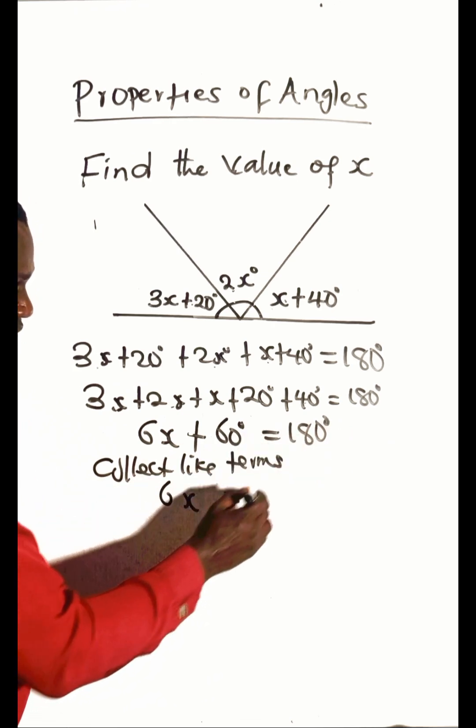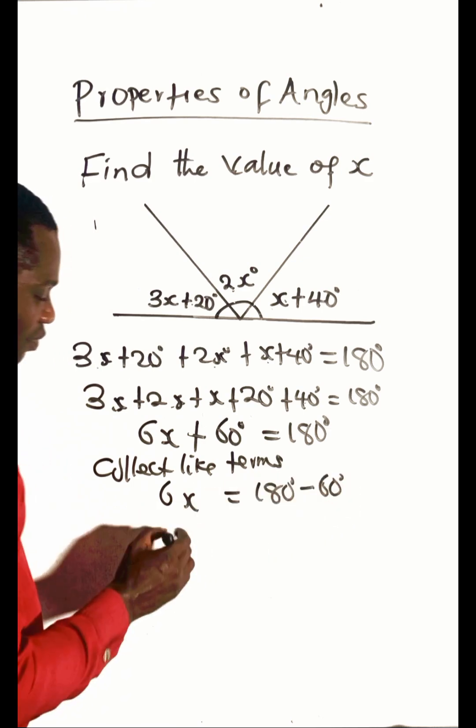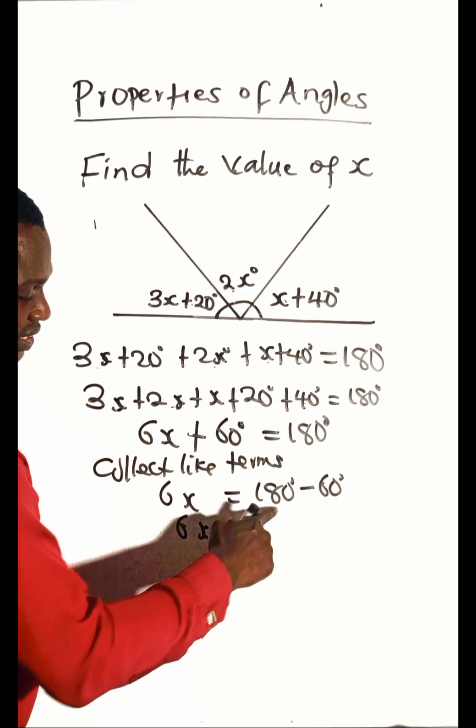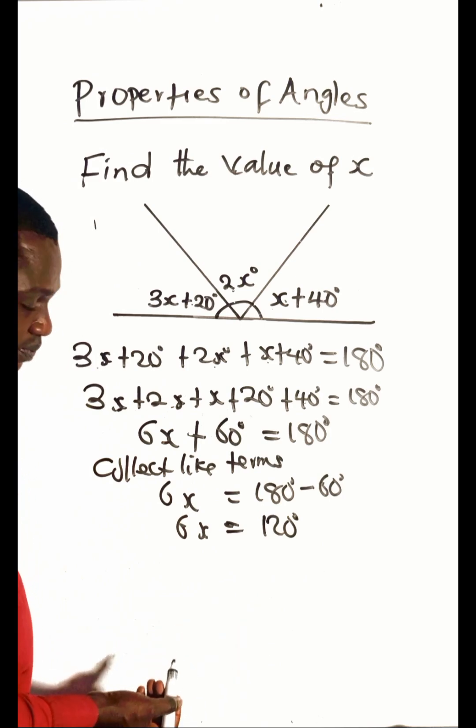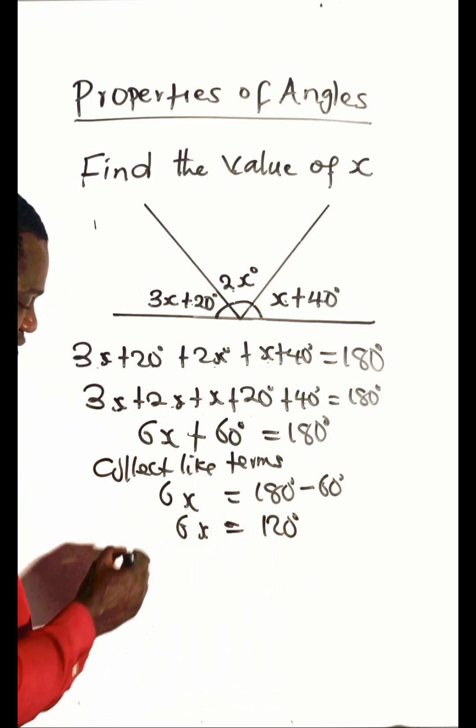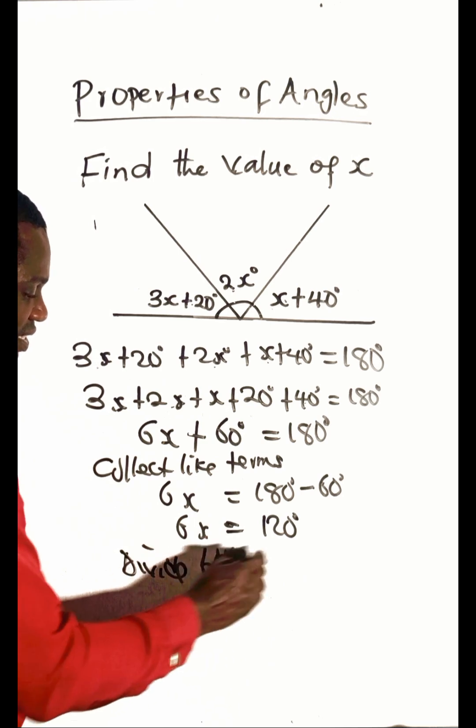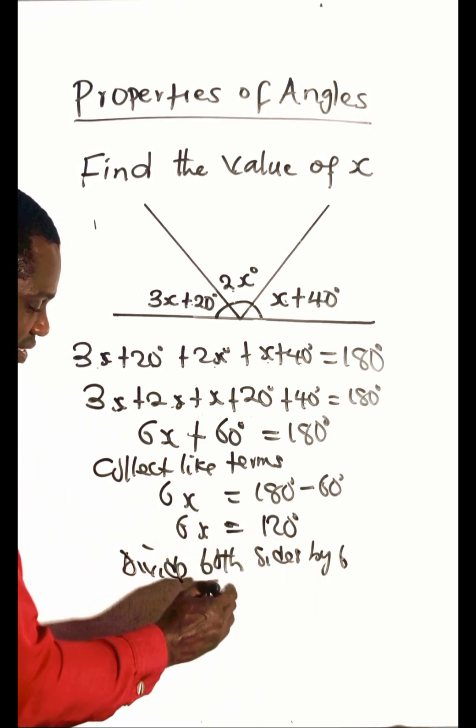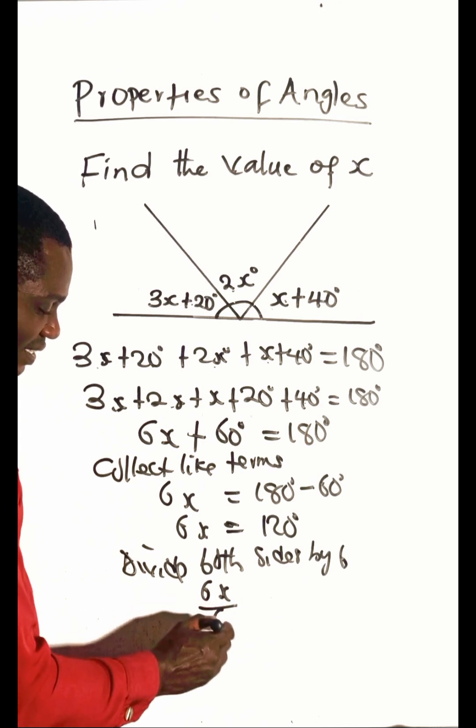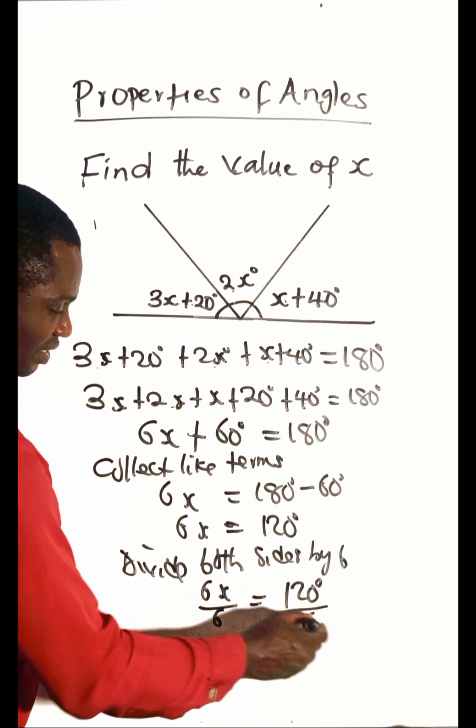180 minus 60 is 120 degrees, so we divide both sides by 6. That means 6x divided by 6 equals 120 degrees divided by 6.